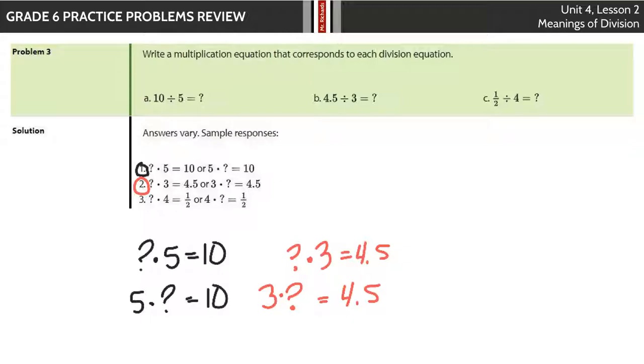And lastly, 1 half divided by 4 equals what? Your answers are here, but again, you could take the what and multiply by 4 to get 1 half. You could take 4 and multiply by the what to get 1 half. Just switching the orders up.